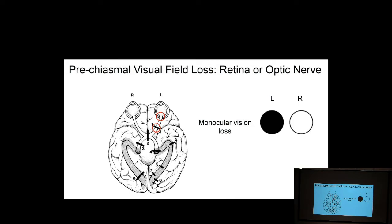When we have a visual field deficit, we want to categorize it into three areas: lesions anterior to the chiasm, lesions at the chiasm, and lesions posterior to the chiasm. A lesion anterior to the chiasm will always cause monocular vision loss — a left optic nerve or retinal lesion means the patient has blindness or some degree of visual loss only in that eye.